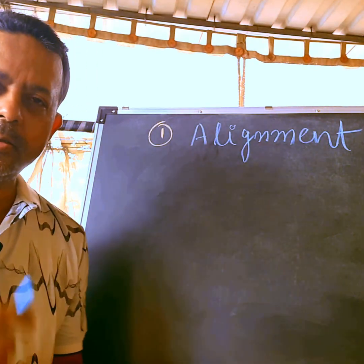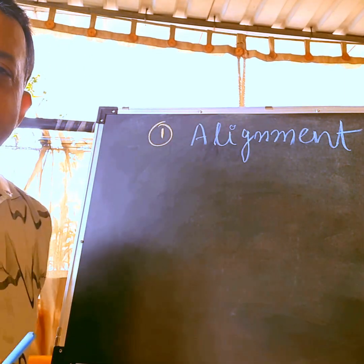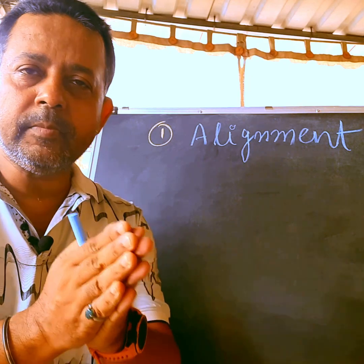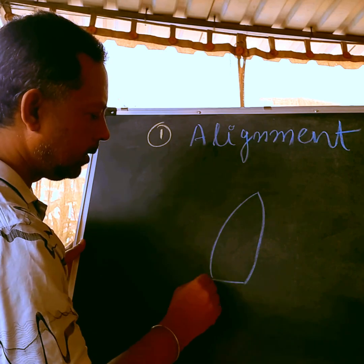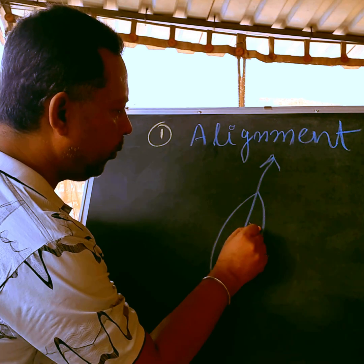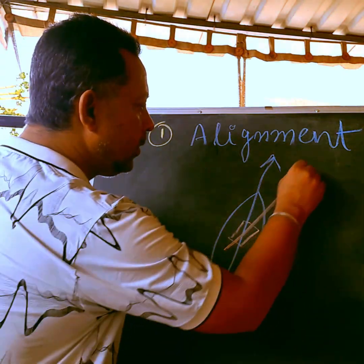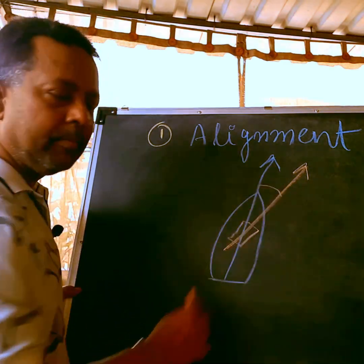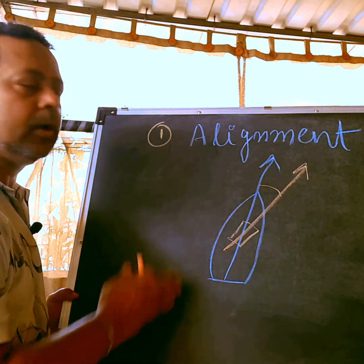To find our exact heading, the very first thing we need to address is the alignment error. The alignment error is the error between the angle of your vessel's fore and aft line and your gyro's fore and aft line. If the gyro is not exactly aligned with the vessel's fore and aft line, the angle between them becomes your alignment error — and this is the very first thing you need to take care of.